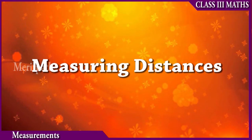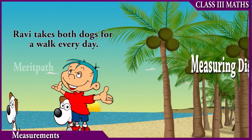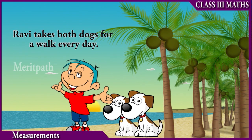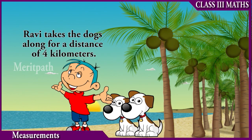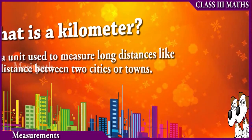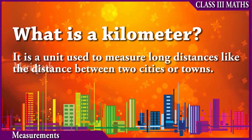Measuring distances. Ravi takes both the dogs for a walk every day. Ravi takes the dogs along for a distance of 4 kilometers. What is a kilometer? It is a unit used to measure long distances, like the distance between 2 cities or towns.